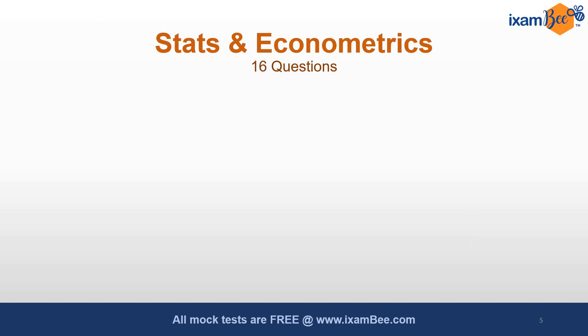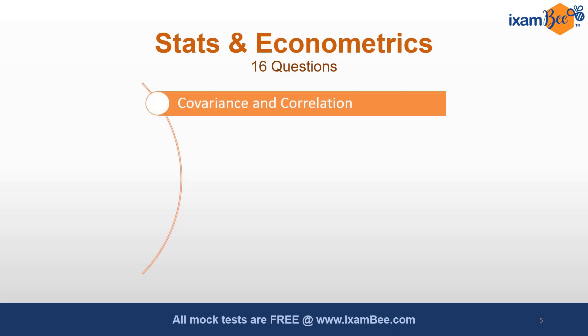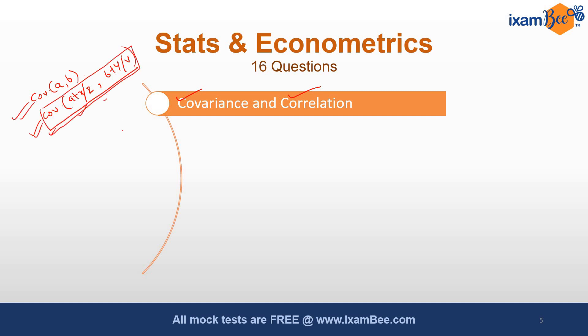Coming to the third part of the paper — stats and econometrics. There were 16 questions from this part, with two questions being four-markers. Most of the questions were from covariance and correlations. For example, you were given the covariance of A and B and then asked to calculate the covariance for (A+x)/B and (B+y)/B. This type of question was there.